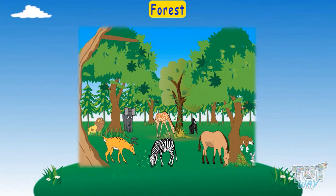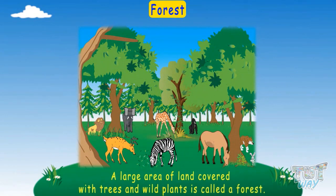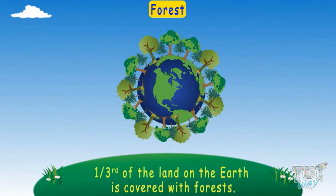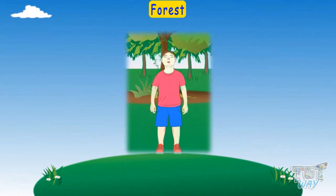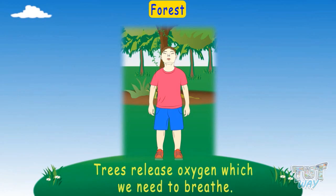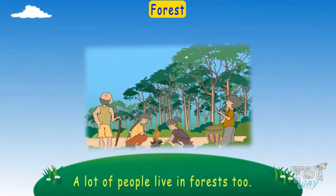Forests: A large area of land covered with trees and wild plants is called a forest. One-third of the land on Earth is covered with forests. Forests help us breathe, as trees release oxygen which we need to breathe. A lot of people live in forests too.